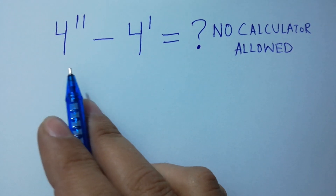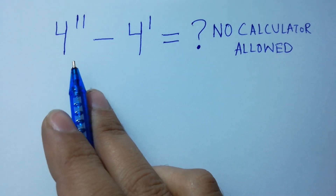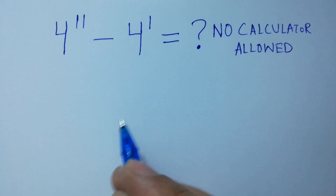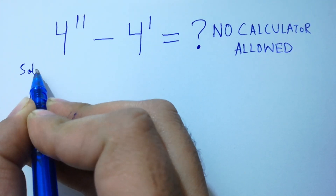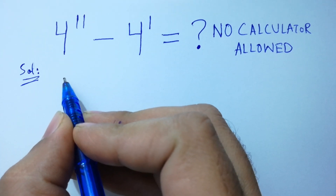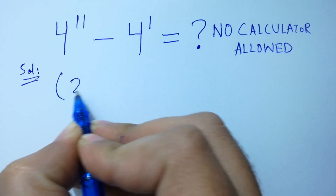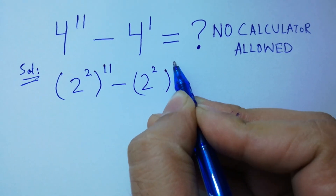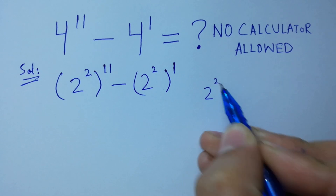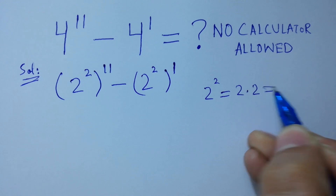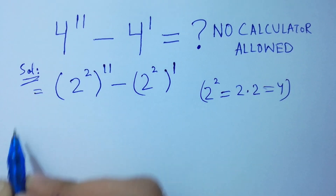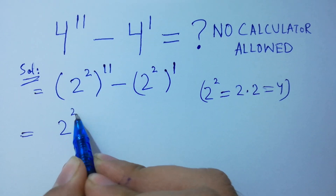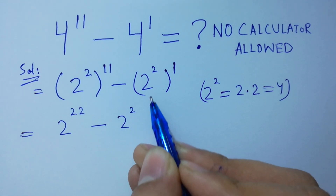Hello friends, what is 4 to the power 11 minus 4 to the power 1? No calculator allowed. Let's find a solution. This is the same as 2 squared to the power 11, minus 2 squared to the power 1, since 2 squared equals 2 times 2, which is 4. I hope you understood.